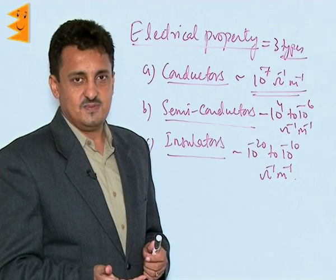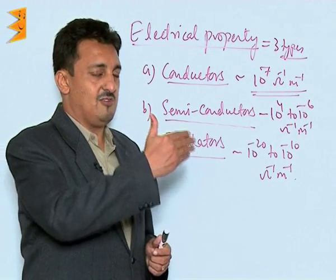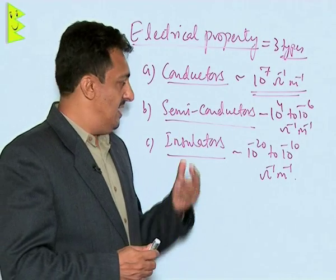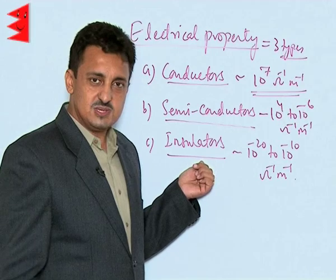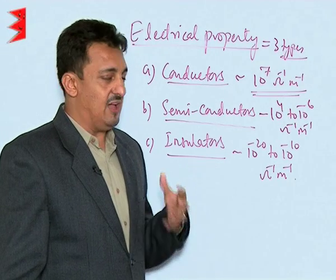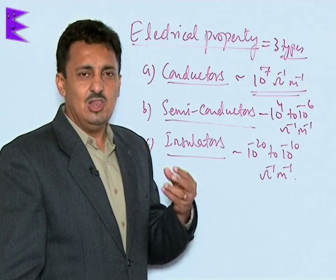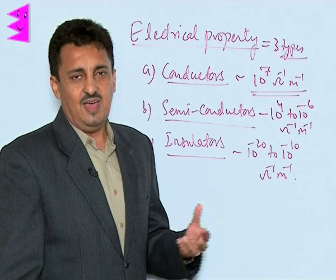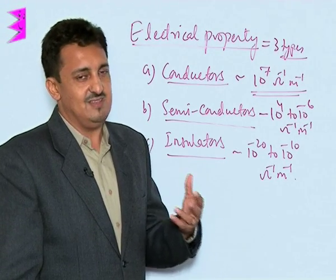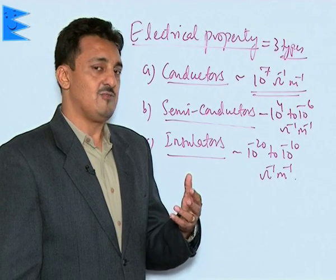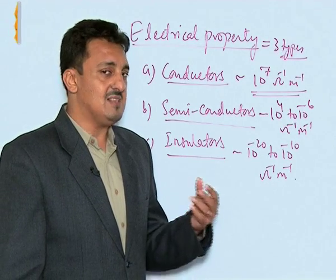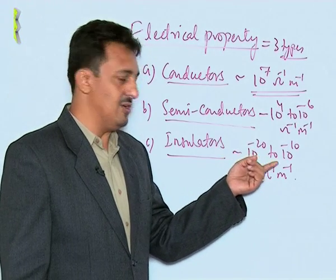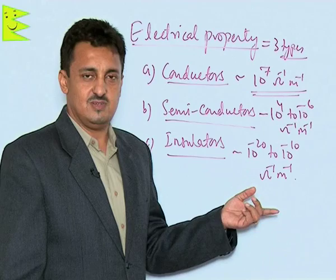In semiconductors, when heated their electrical conductivity increases because more electrons are able to cross the energy barrier. The last category is insulators, which have very very low electrical conductivity, almost negligible, and that is why they normally don't allow the passing of electricity through them. Their electrical conductivity is of the range of 10 to the power minus 20 to 10 to the power minus 10 ohms inverse meter inverse.